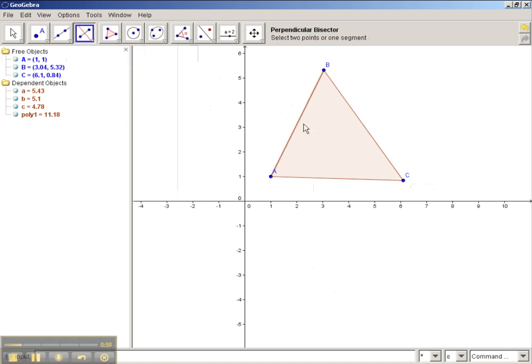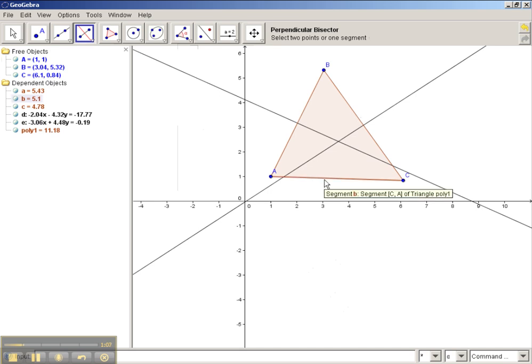And then it's easy. All you have to do is select each side of the triangle. So go ahead and select side AB, side BC, and last but not least, side AC.